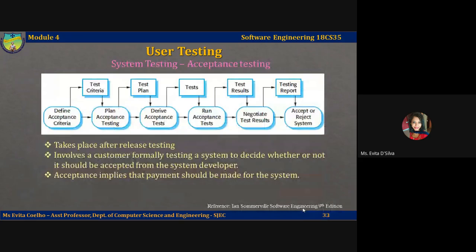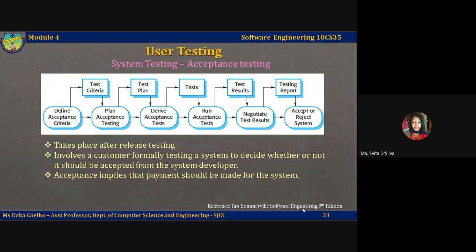The third type of testing is acceptance testing. Acceptance testing is an inherent part of custom systems development and takes place after release testing. It involves a customer formally testing the system to decide whether or not it should be accepted from the developer. Acceptance implies that payment should be made for the system.